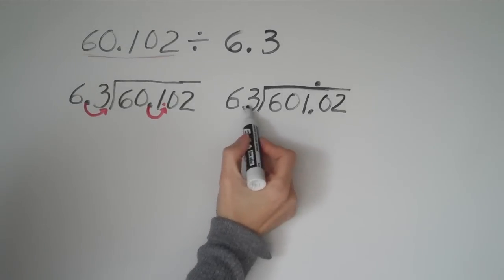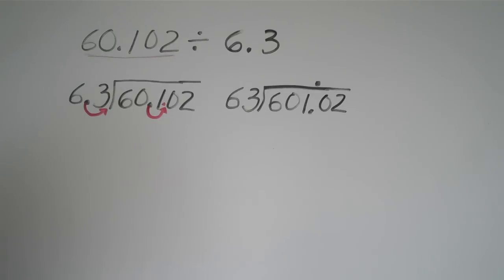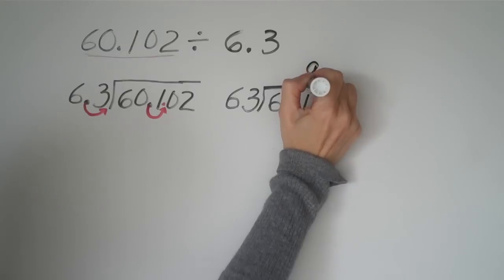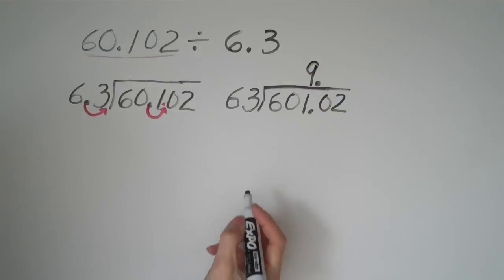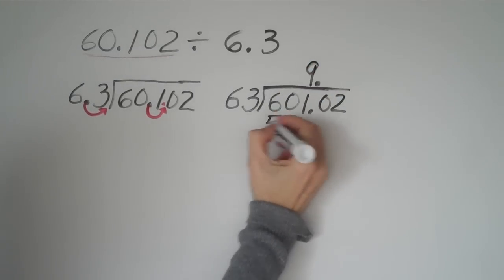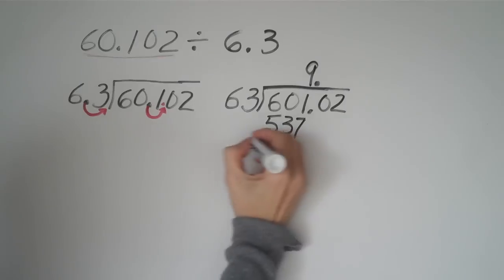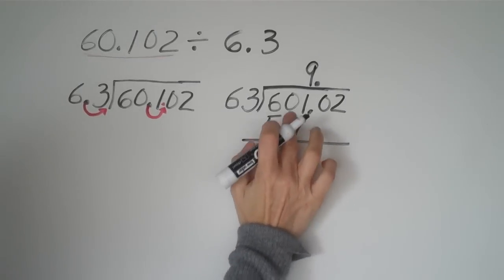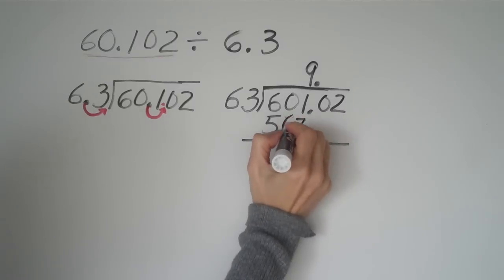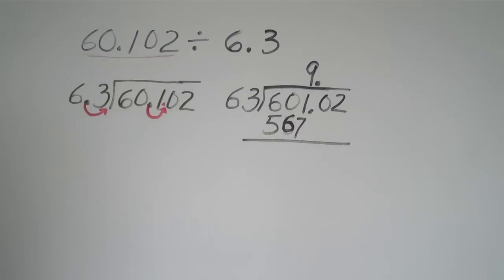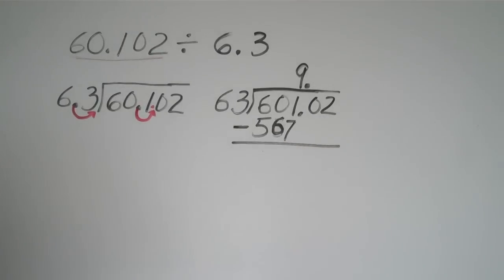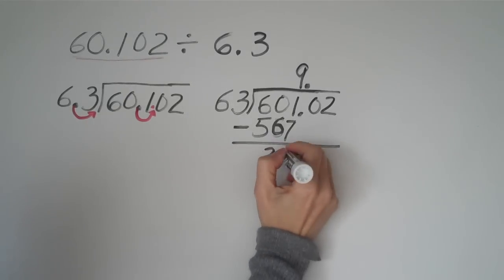And well, if you could think about 63 times 10 would be 630, that would be a little too much. And if you can guess nine, you would be right. 63 times nine is 567. Sorry about that. And then we're going to go ahead and do the subtraction. And we get a 34 here.